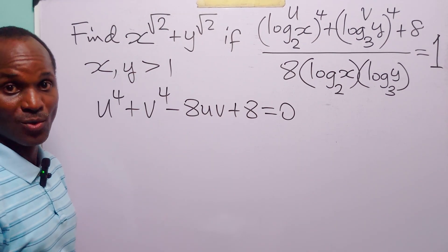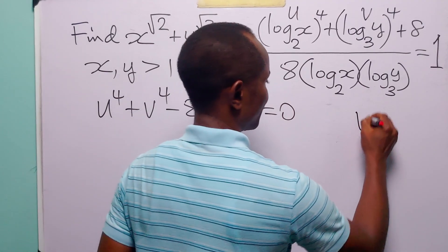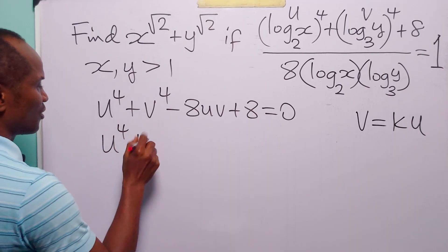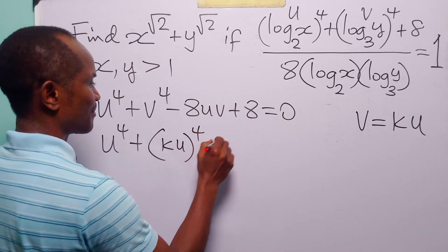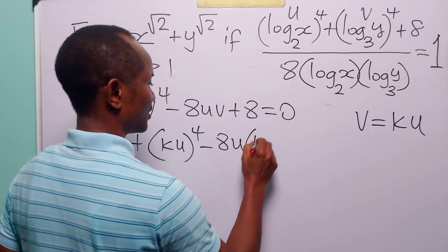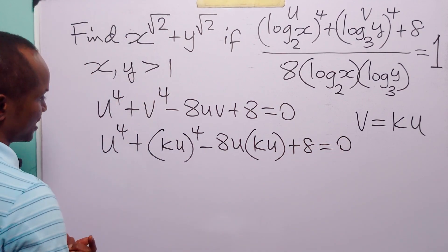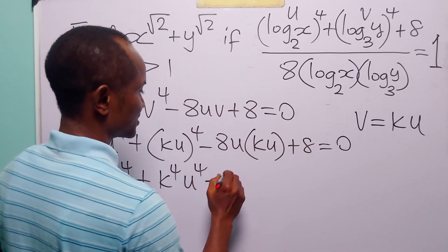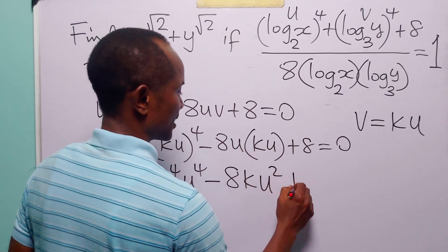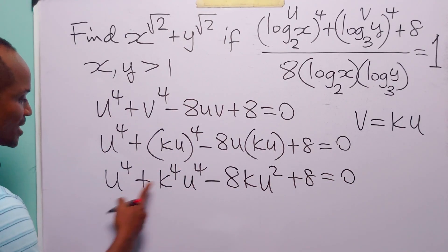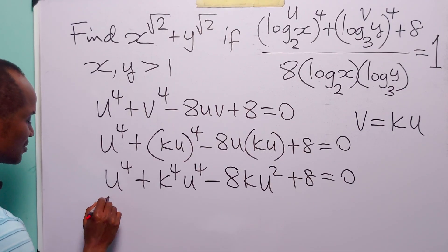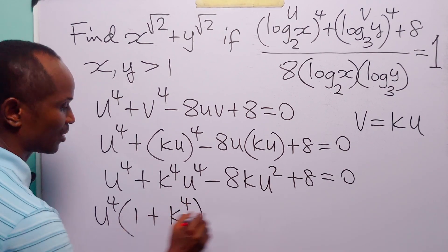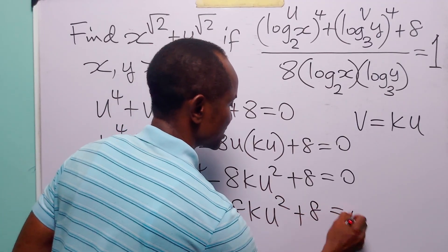In case you do not know how to complete the square, there is another way of handling this equation. Let us assume that v equals k times u, where k is a real constant. Then, this equation becomes u to the power 4 plus ku to the power 4 minus 8u times ku plus 8 equals 0.